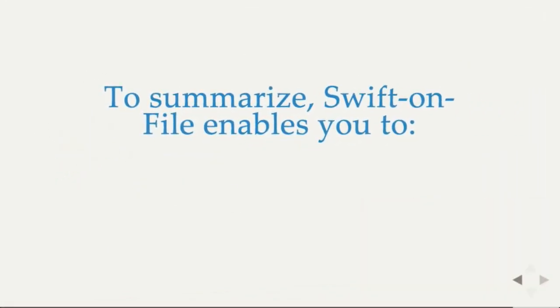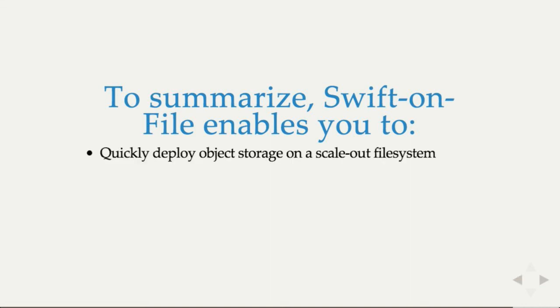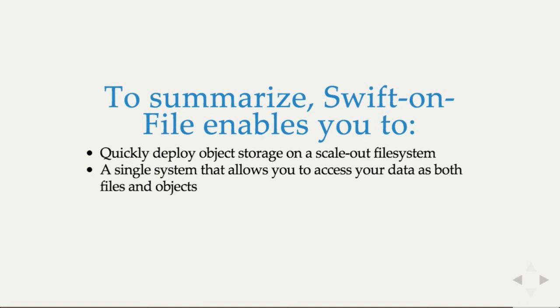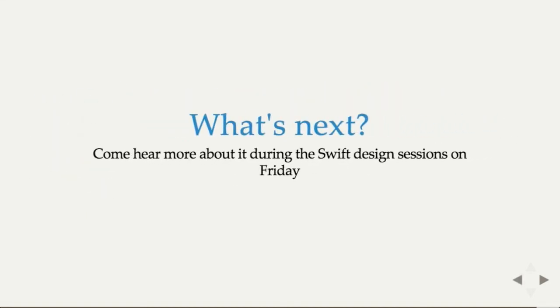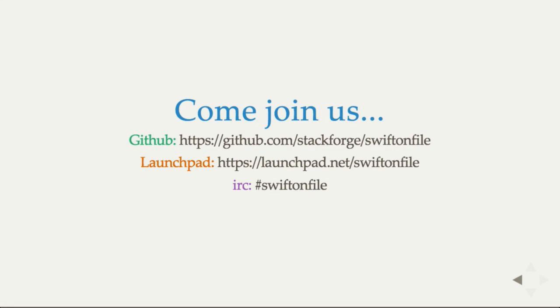To summarize: Swift on File enables you to quickly deploy your object store on top of a scale-out file system, for example Gluster or GPFS. It allows you to have a single system where you can access your data as both objects or files, whether you need a RESTful interface or a file interface. The great thing is that through storage policies, you can extend an existing Swift cluster without deploying a whole new one. During the design summit, we'll be talking more about Swift on File on Friday. We invite everyone to join us, and we have more information on our IRC channel, GitHub, and Launchpad project.